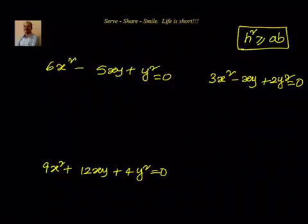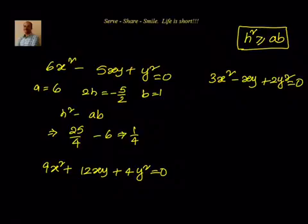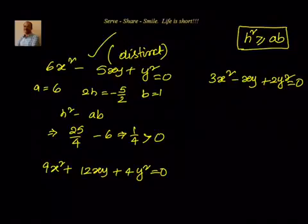For the first equation, A = 6, 2H = −5/2 so H = −5/4, and B = 1. H² − AB = 25/16 − 6... wait, H² = 25/4 divided appropriately: H² − AB = 25/4 − 6 = 1/4, which is greater than 0. So this represents a pair of distinct lines.